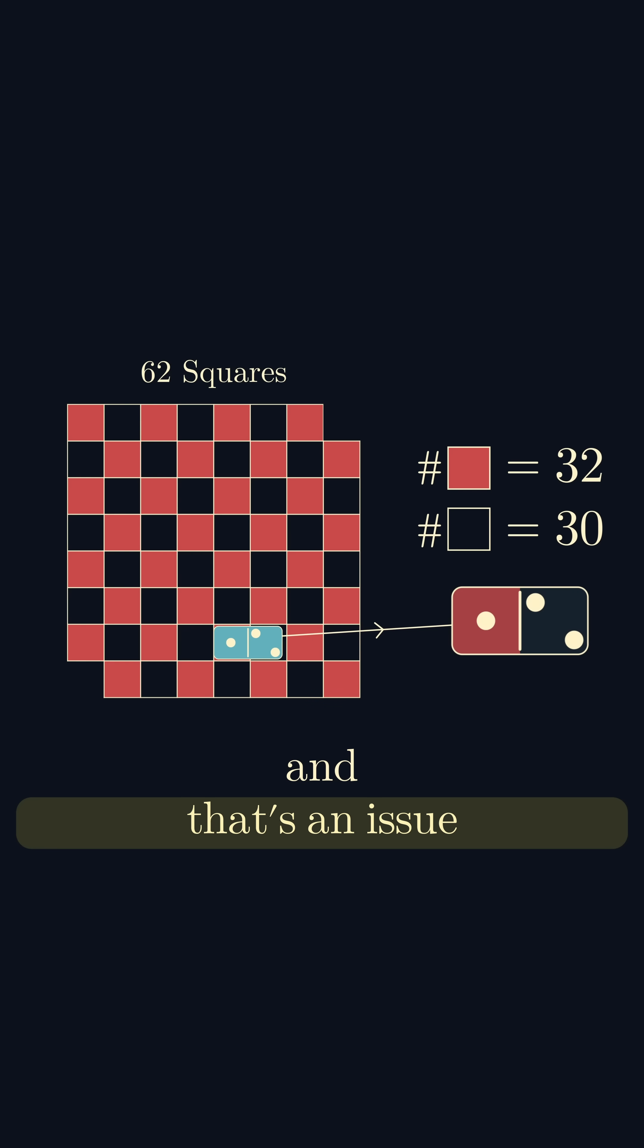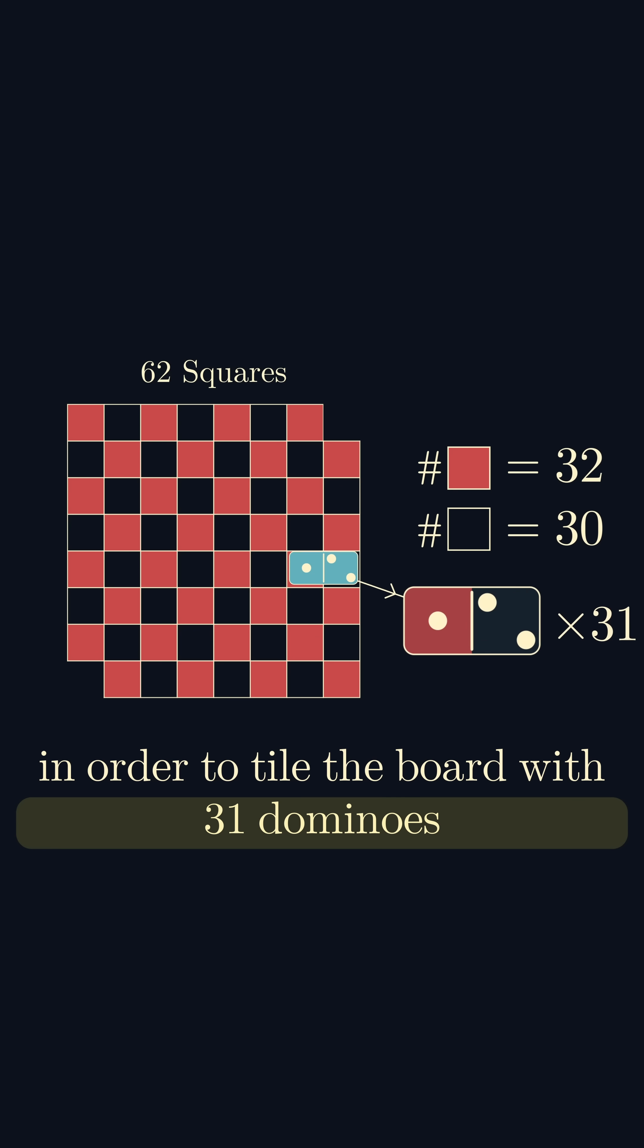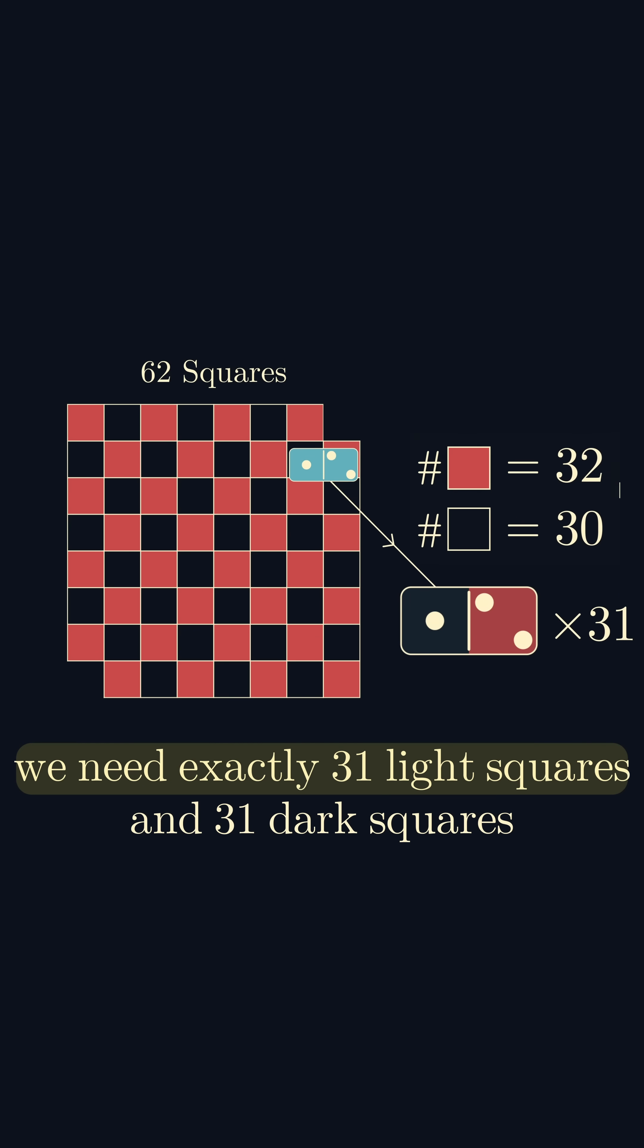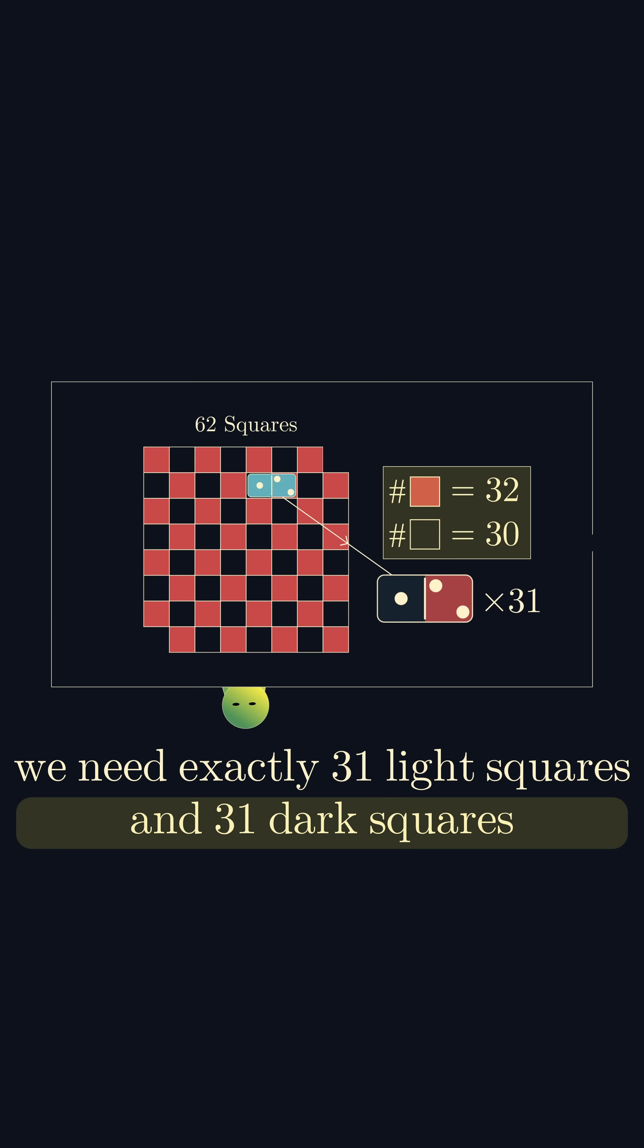And that's an issue. In order to tile the board with 31 dominoes, we need exactly 31 light squares and 31 dark squares.